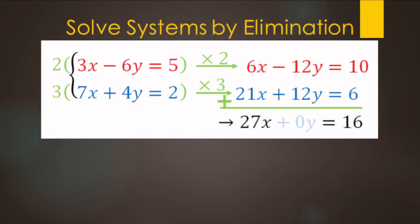To summarize solving systems by elimination: make sure the coefficients are opposites so that when you add straight down, a variable is eliminated. Some equations you can just add straight away; some you'll need to multiply one equation; and in more complex cases like the ones we did here, you may need to multiply both equations before adding.